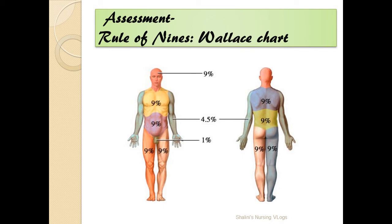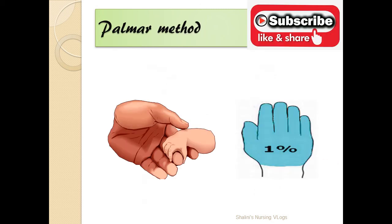Now for assessment of burns, the most common method is the Rule of 9s, shown here on the Wallace chart. We calculate the total burnt surface area: the head and neck scores 9%, chest 9%, abdomen 9%, the whole back 18%, each leg 18% (9% anterior and 9% posterior), each arm 9% (4.5% anterior and 4.5% posterior), and the perineum 1% — totaling 100%.